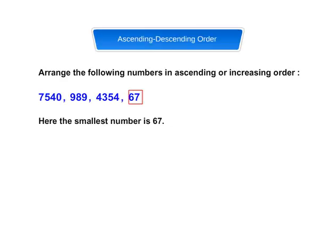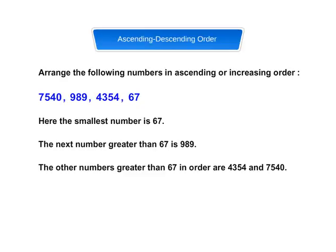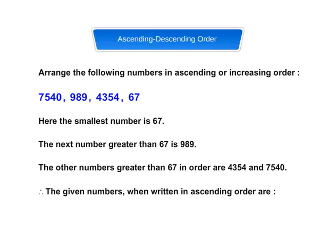Here, the smallest number is 67. The next number greater than 67 is 989. The other numbers greater than 67 in order are 4,354 and 7,540. Therefore, the given numbers when written in ascending order are: 67, 989, 4,354, and 7,540.